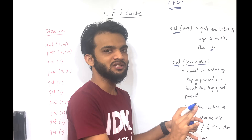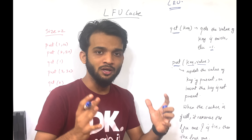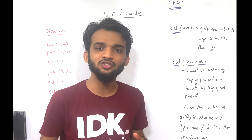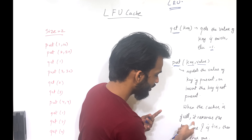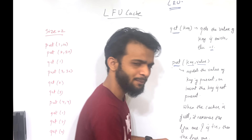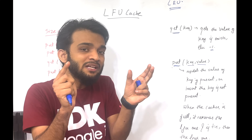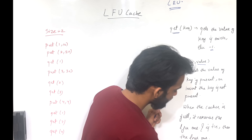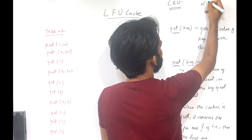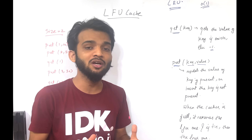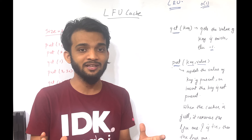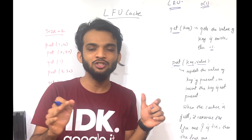If the key is not present, you insert it into the cache. Now when the cache becomes full — for example the size is 2 — when a put function is called and your data structure is completely filled up, you remove the LFU one, the guy who was least frequently used. If there are multiple guys who are least frequently used, among them you remove the LRU — the least recently used guy. Both functions must work in O(1) constant time complexity.